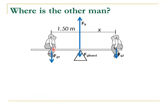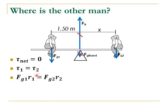We're going to use torque to solve this, because one person is trying to torque the board counterclockwise while the other is trying to torque it clockwise. The net torque should be zero, so all the clockwise torques should equal all the counterclockwise torques. The normal force and the board's gravity force are at the pivot point, so their radius is zero and they cause no torque. Therefore torque one equals torque two: force times radius on each side. We plug in our numbers — 525 times 1.5 equals 455 times radius two — and solve to get the answer.